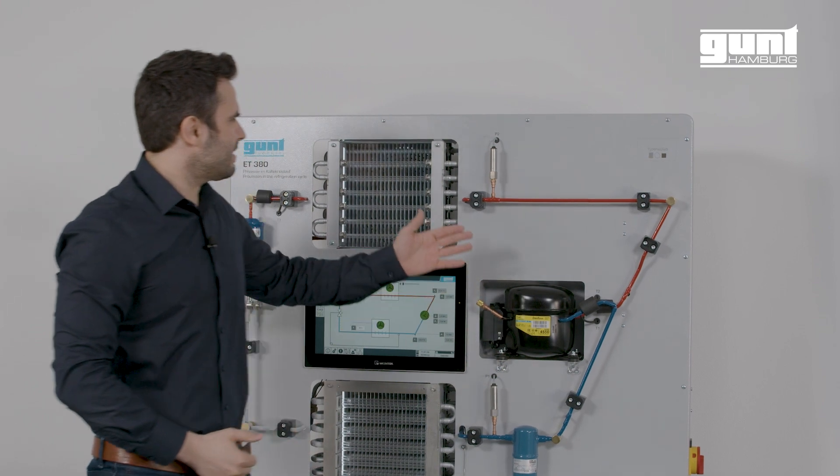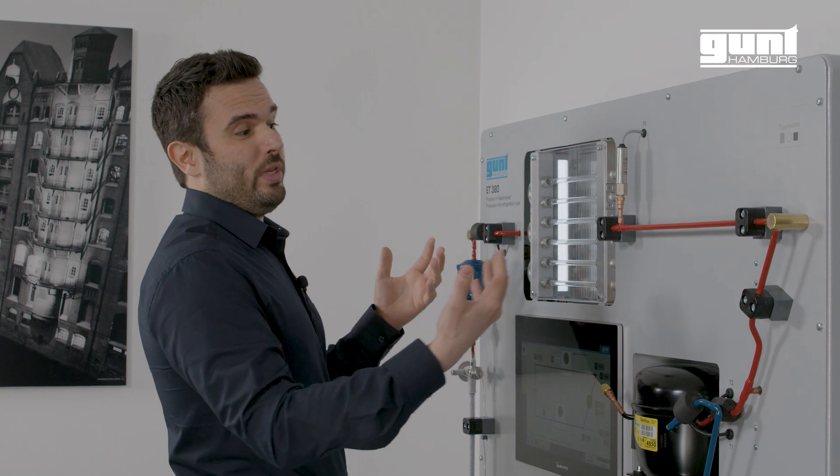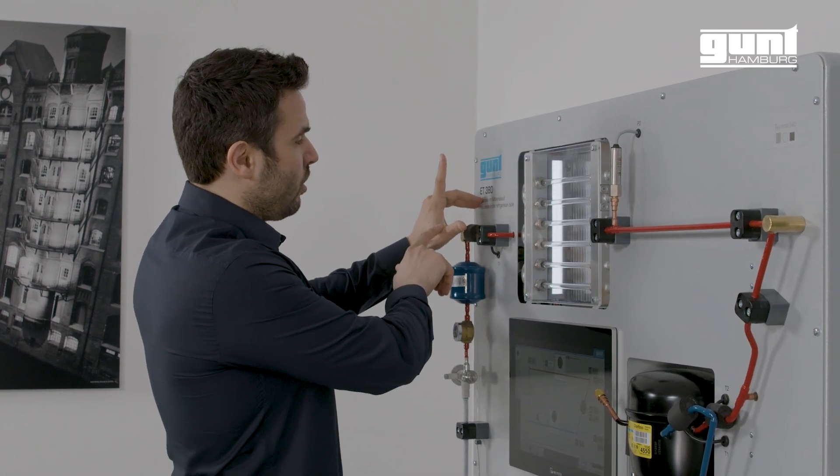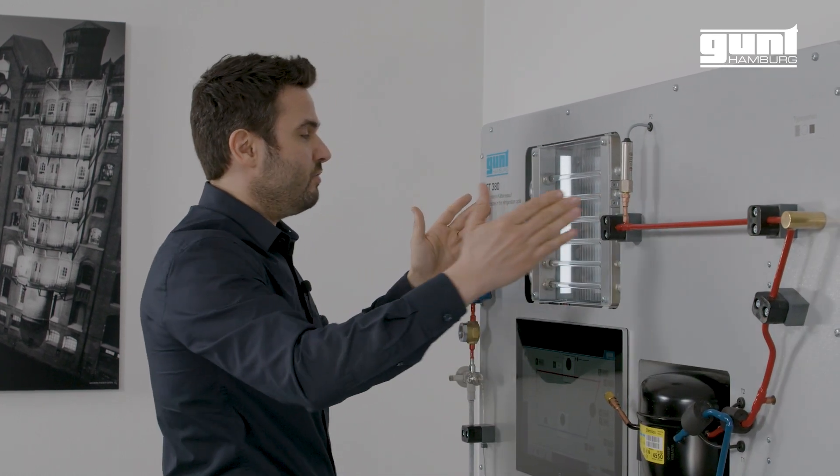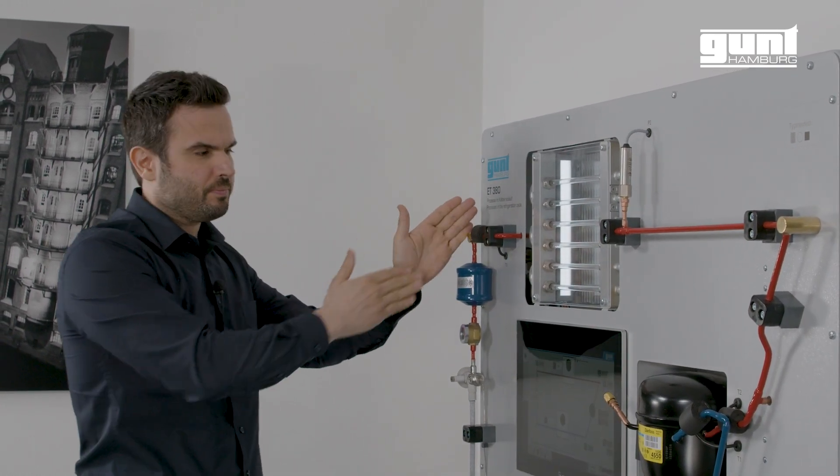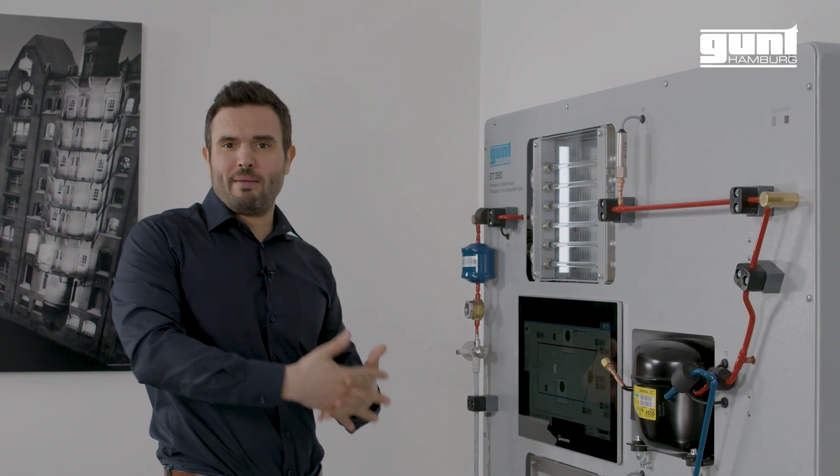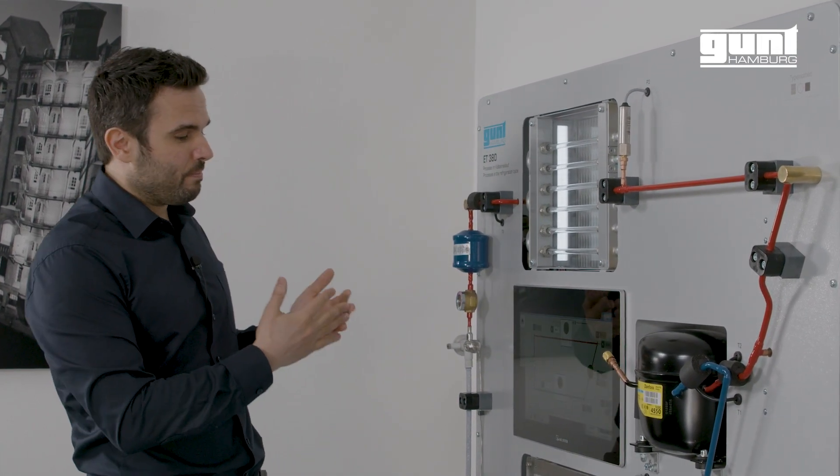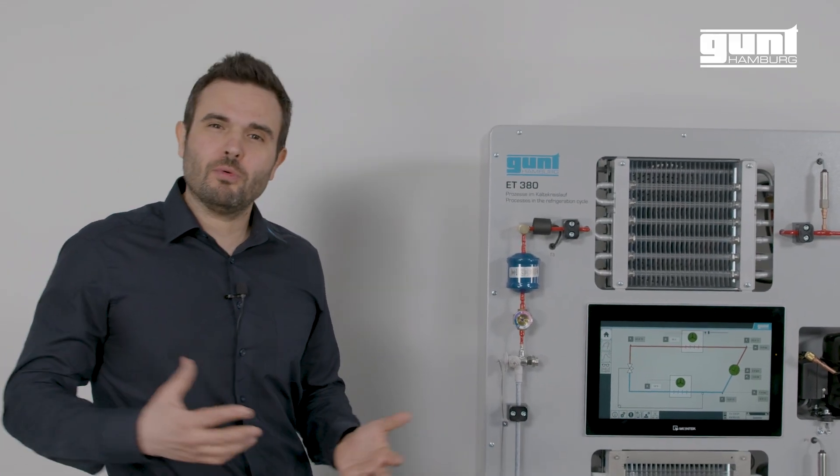In the next step we have a look at the condenser where all the heat is released, and what we can see is that the condensation takes place at a constant pressure level and the specific enthalpy drops back to its initial level. To make the liquefied refrigerant evaporate again, we make use of an expansion valve to bring the pressure back to the evaporation pressure. Interestingly, the specific enthalpy remains constant.